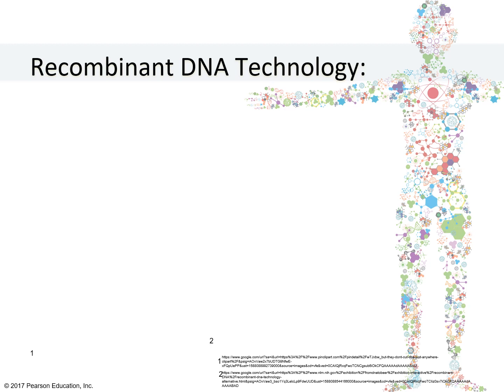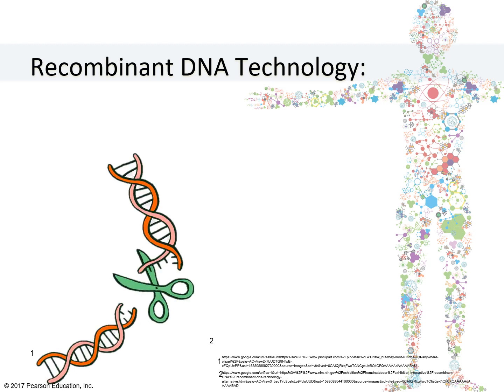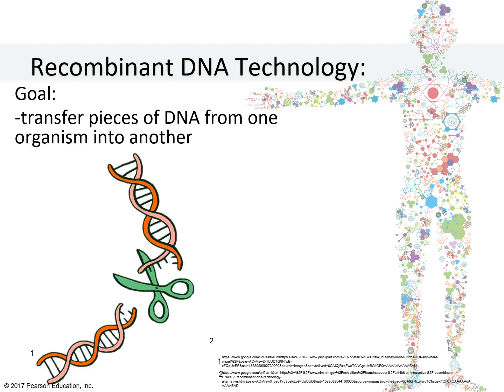By knowing the sequence of a DNA, researchers were able to analyze its structure and the genes that it contains. With this knowledge, they were able to cut, splice, and clone the DNA. This process is called recombinant DNA technology, and its goal is to transfer pieces of DNA and the genes that it contains from one organism into another. The most common use of recombinant DNA technology is in the production of useful protein products using bacteria.